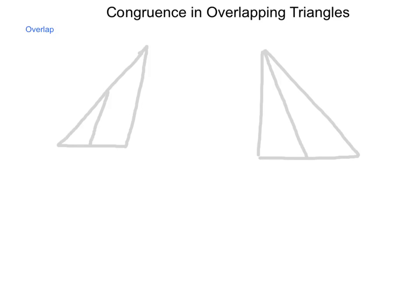The last area we're going to look at in congruence of triangles is congruence of overlapping triangles. Now sometimes when diagrams are given, as you see here, we actually have multiple triangles showing up simultaneously.